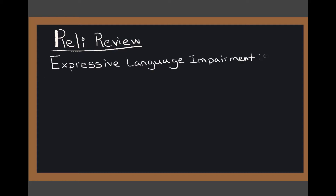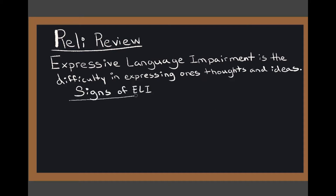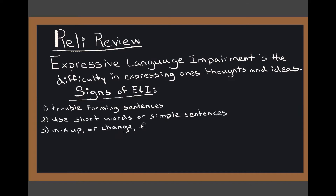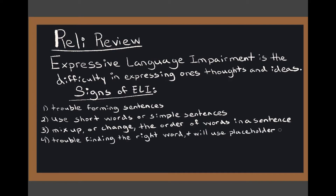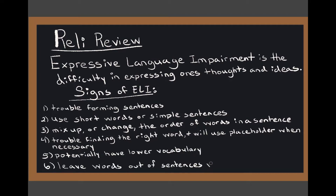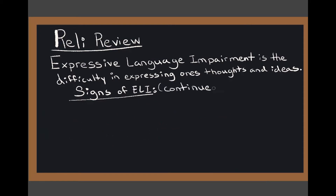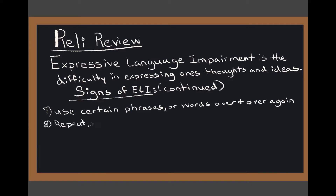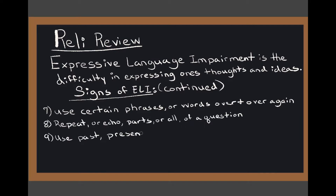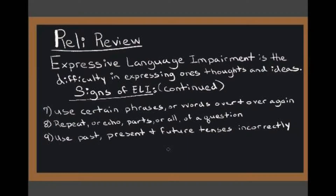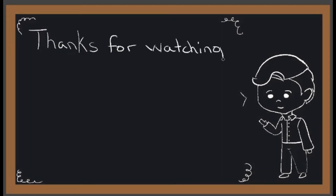Expressive language impairment is the difficulty in expressing one's thoughts and ideas. Signs of ELI include trouble forming sentences, using short words or simple sentences, mixing up or changing the order of words in a sentence, trouble finding the right word and using placeholders when necessary, potentially having lower vocabulary, leaving words out of sentences, using certain phrases or words over and over again, repeating or echoing parts or all of a question, and using past, present, and future tense incorrectly. Thanks for watching the review for RLI.